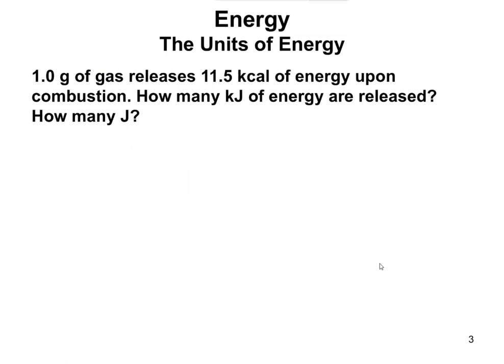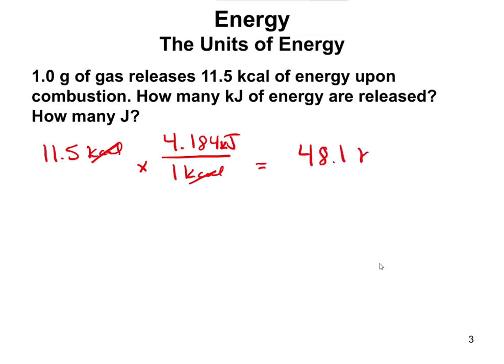Let's do a conversion example. A gram of gas releases 11.5 kilocalories of energy upon combustion. How many kilojoules does this correspond to? Starting with 11.5 kilocalories, we use the conversion that 1 kilocalorie equals 4.184 kilojoules. The kilocalorie units cancel, giving us 48.1 kilojoules. We started with three significant figures, and our conversion factor is a defined amount, so our answer also has three significant figures.